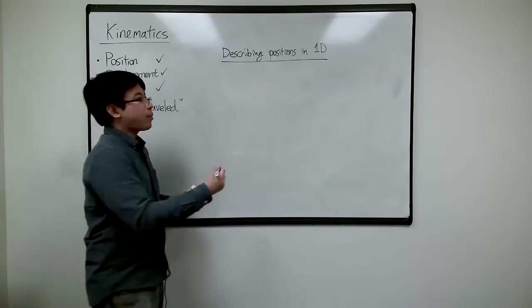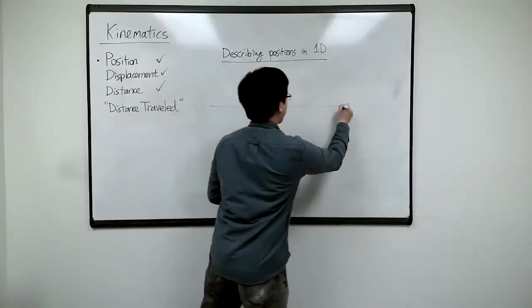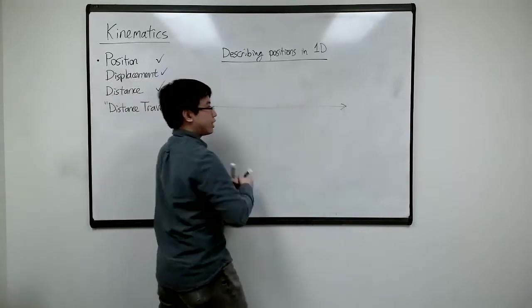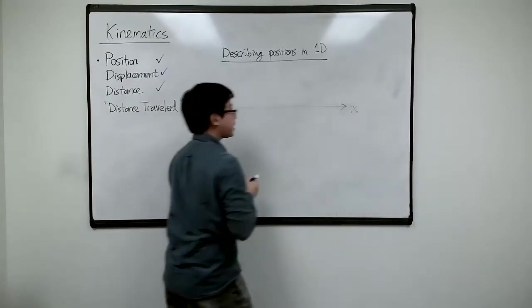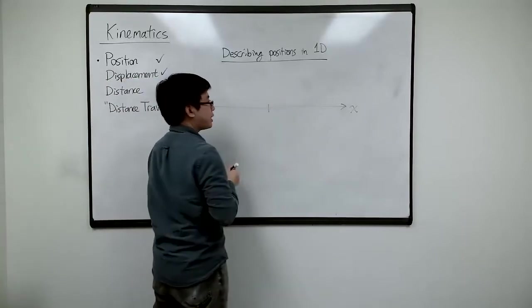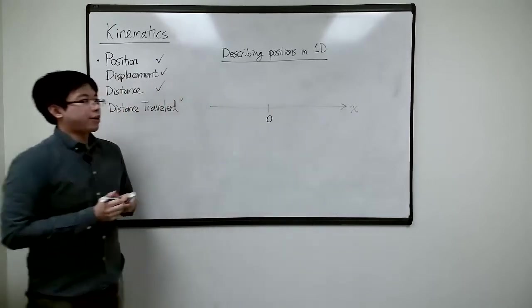But in one dimension, you can sort of get away without doing a vector because you'll still need a coordinate system, which is just the x-axis, and you still need the origin. So let's use that point as zero like that.